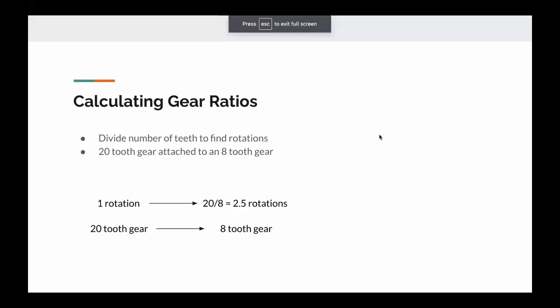To find a gear ratio, you need to divide the number of teeth on the two gears to find the relative number of rotations the second gear would have to the first gear.